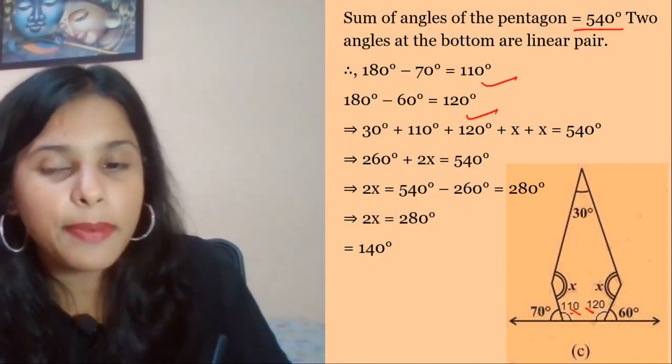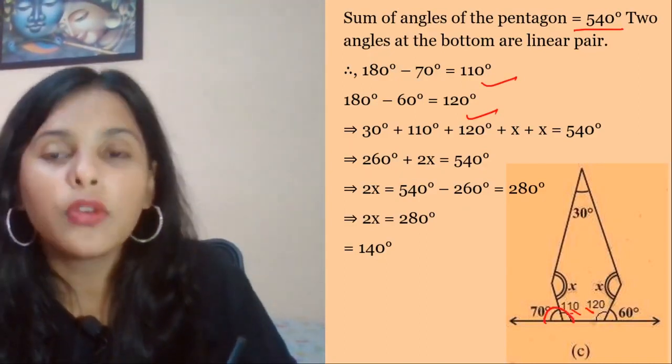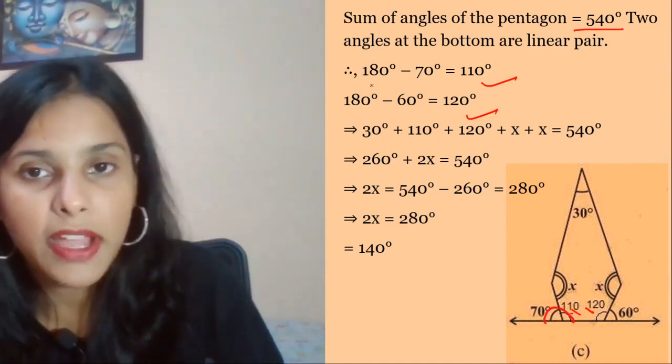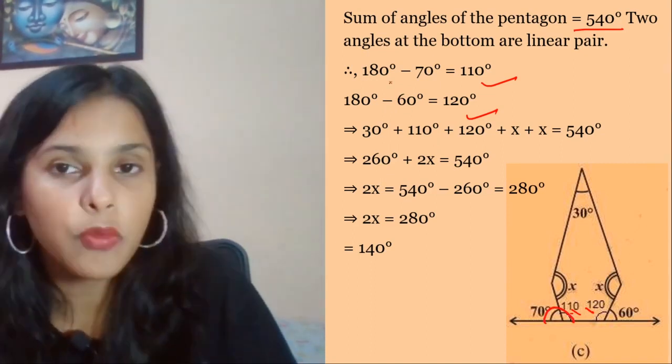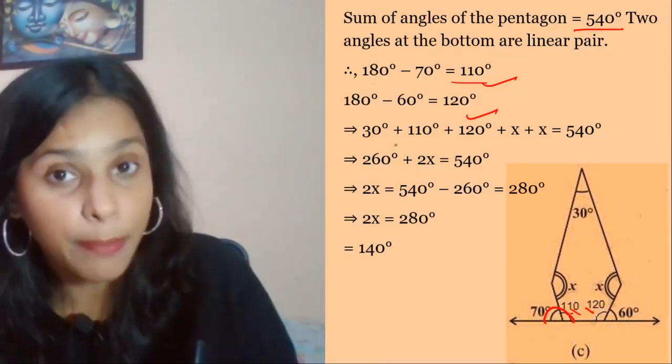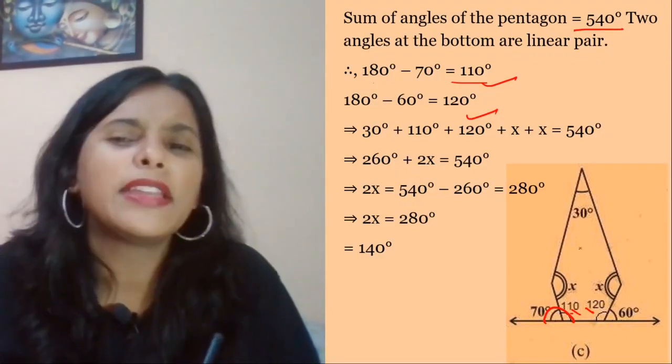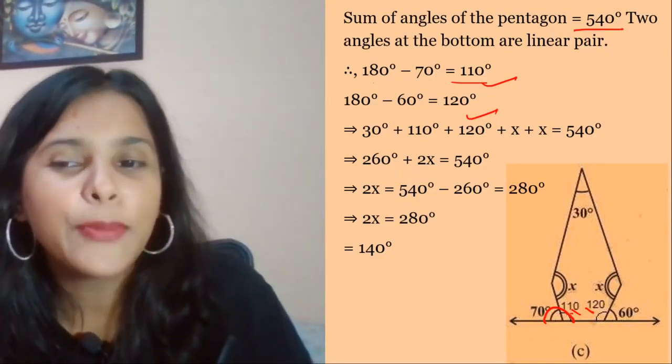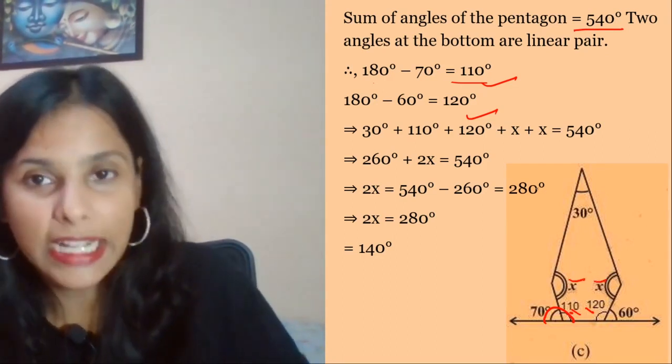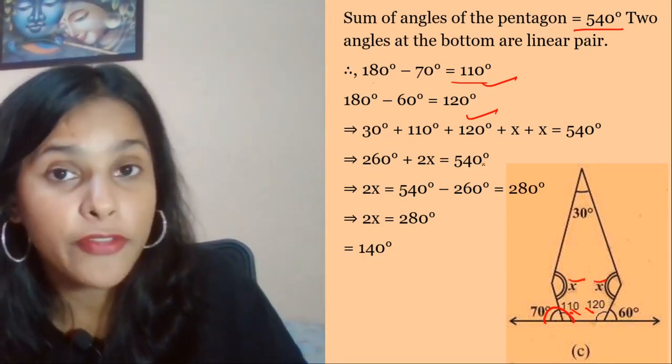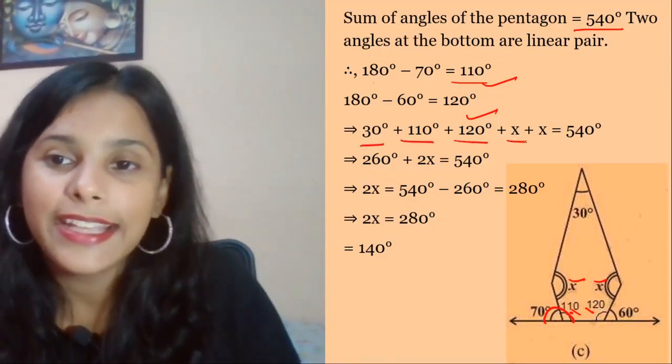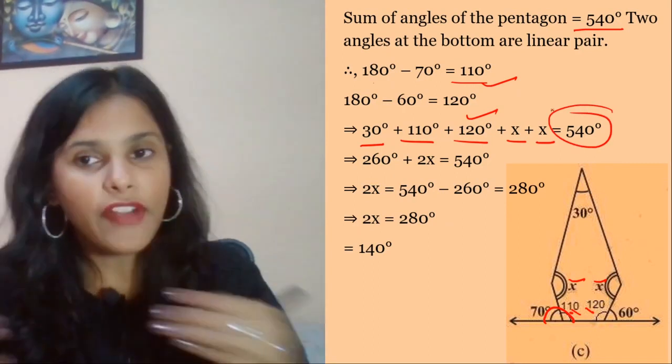This angle and this angle Y form a linear pair, so they equal 180 degrees. This angle is 180 minus 70, which is 110 degrees. So this will be 120. Now I know these three angles: 30, 110, and 120.